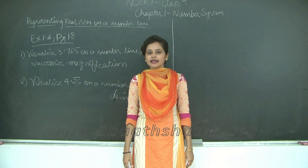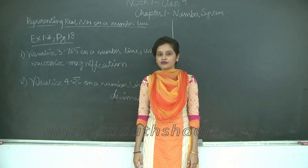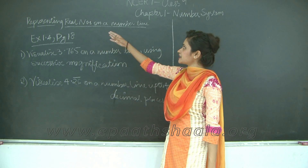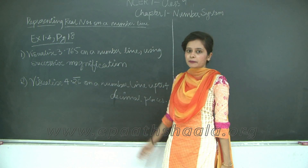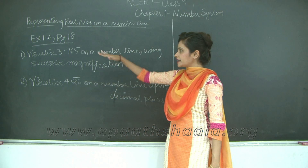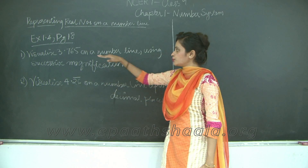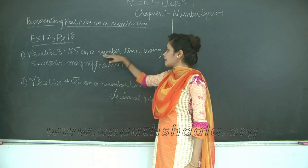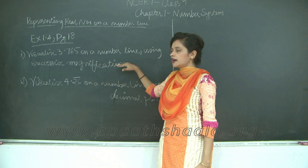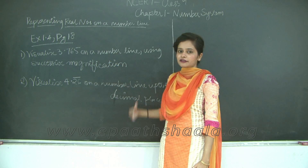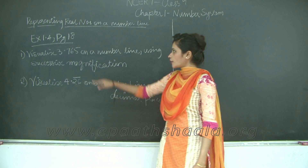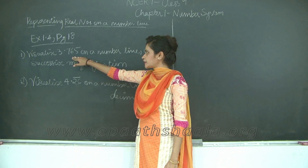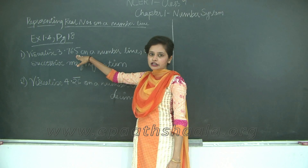Hello students, let us start with exercise 1.4 of number systems which is based on representing real numbers on a number line. Let us read question number 1: Visualize 3.765 on a number line using successive magnification. Now 3.765 is a terminating decimal expansion, therefore this is a rational number.